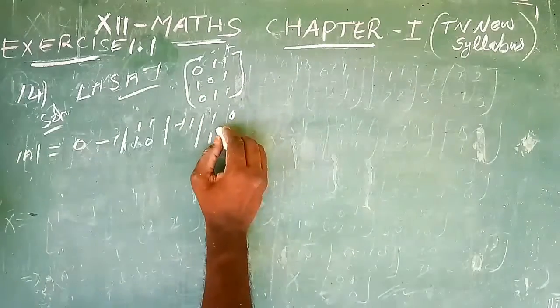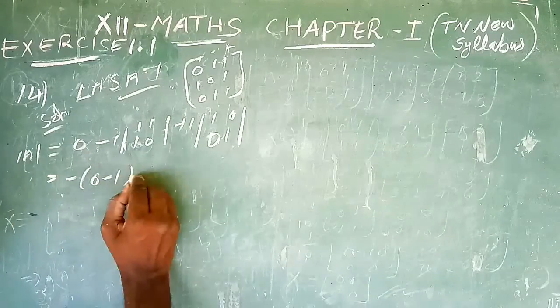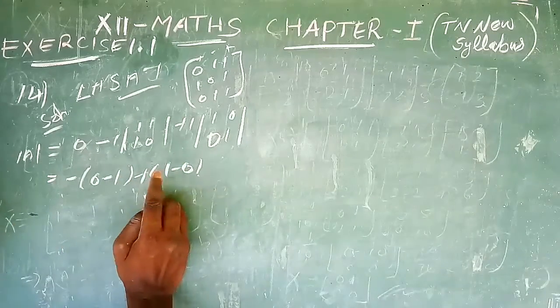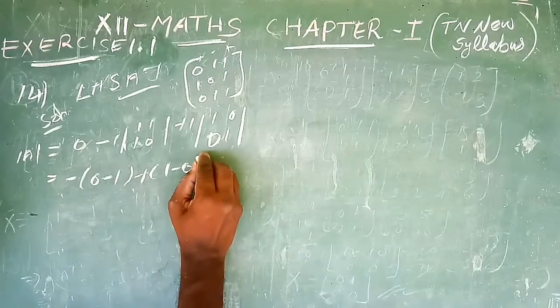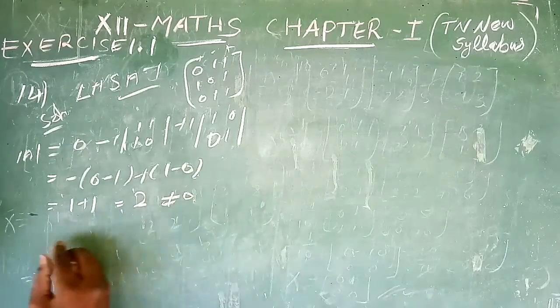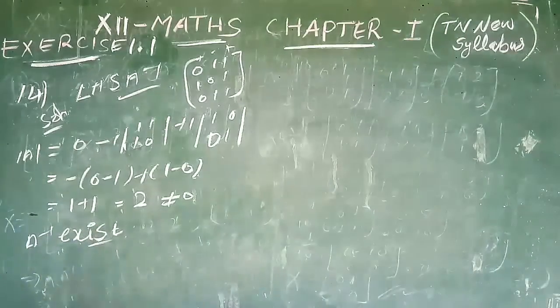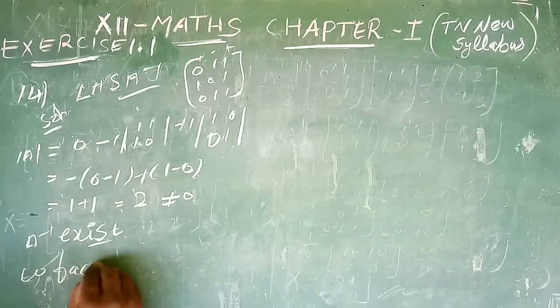In the procedure, the determinant is calculated. The determinant is 1, which is not equal to zero, so the inverse exists. Next, we calculate the adjoint using the cofactor method.